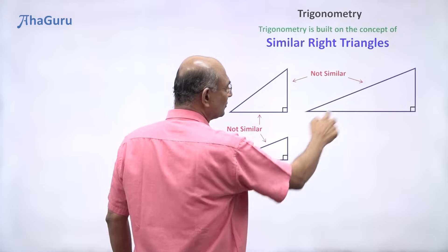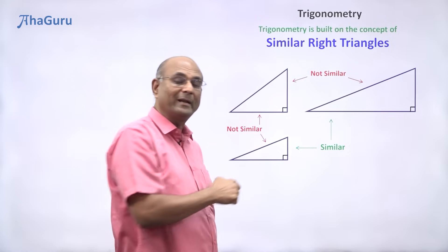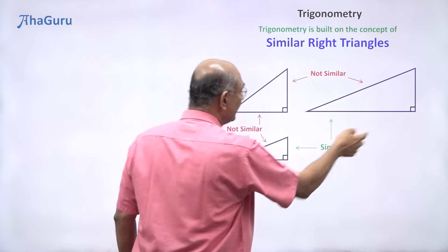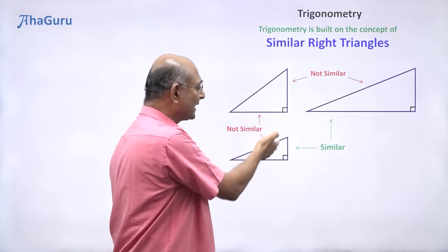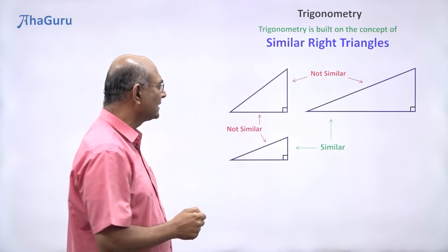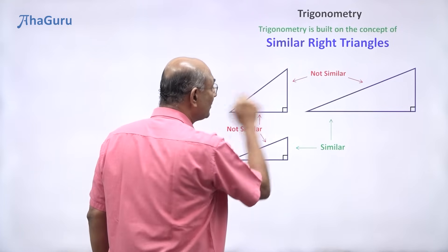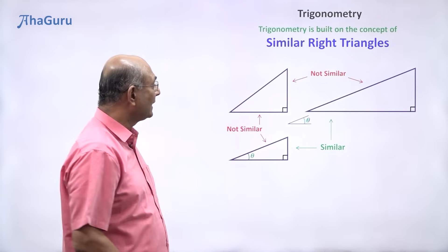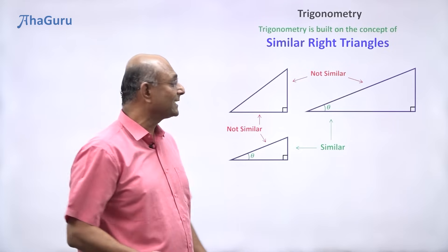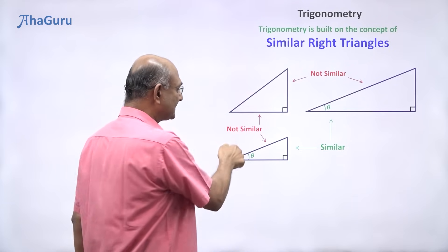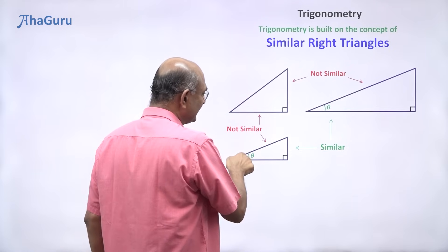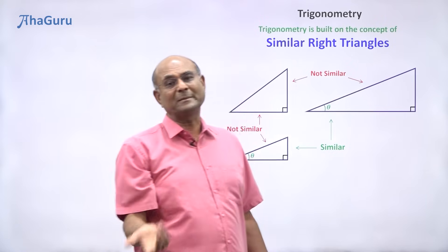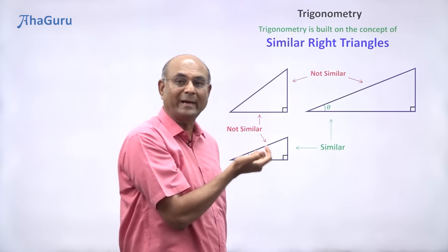On the other hand, what about these two? They look similar. This is 90 and this is 90. In fact, for all right-angled triangles, one of the angles will equal 90 degrees. This angle must be equal to that. Suppose I look at this angle and call it theta. If I lift it up and move it there, does it match? Yes, it matches. So this angle is theta and this angle is also theta — these two angles are equal. What about the third one? Of course they must be equal because the sum must equal 180 degrees.